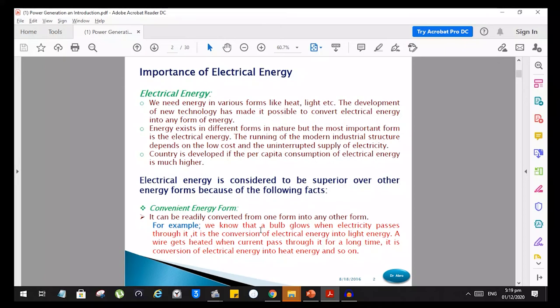It can be readily converted from one form into any other form. For example, we know that the bulb glows when electricity passes through it - this is conversion of electrical energy into light energy. A wire gets heated when current passes through it for a long time - it is conversion of electric energy into heat energy. The electrical energy is a very convenient form that can be converted into other forms. These old 100 watts or 200 watts or 250 watts bulbs with argon gas used to also discharge some heat. Let's take an example of yellow light.